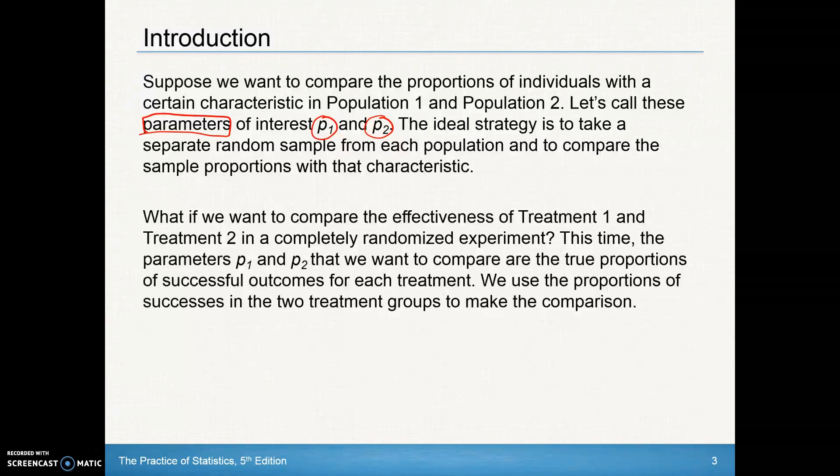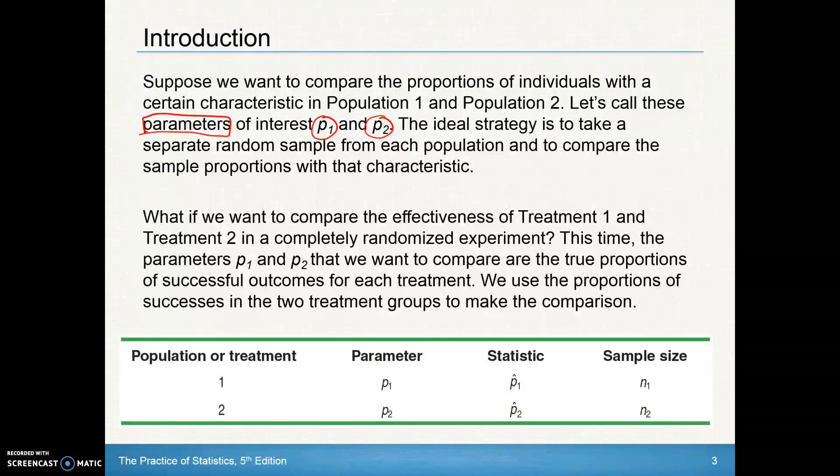What if we want to compare the effectiveness of Treatment 1 and Treatment 2 in a completely randomized experiment? The parameters P1 and P2 are the true proportions of successful outcomes for each treatment. We use the proportions of the two treatment groups to make the comparison. Again, making sure we understand parameters versus statistics, which have the hat and sample sizes for each population.